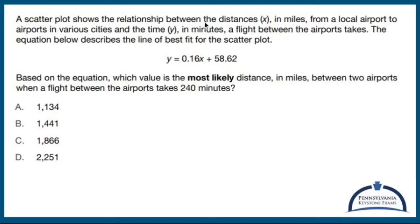A scatterplot shows the relationship between the distance x in miles from a local airport to airports in various cities and the time y in minutes a flight between the airports takes. The equation below describes the line of best fit.